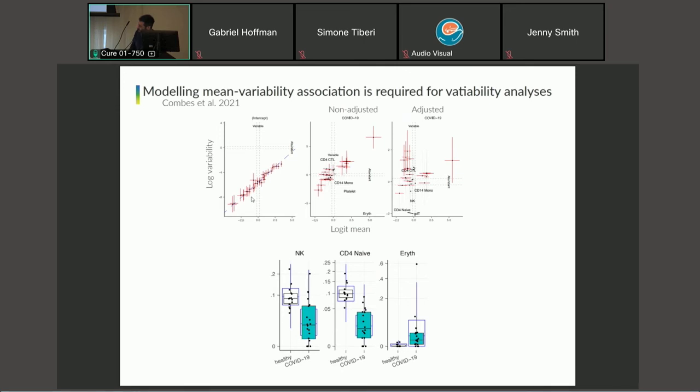I'll show you an analysis done on a dataset. This is a simple linear model where we are comparing healthy individuals with COVID-affected individuals. Here's the intercept, and here's the effect. We're plotting logit mean and log variability. This is the baseline. We can see this striking association here. Because mean and variability are associated, their effects will be associated. As you can see, if we don't take into account this association, every time we call a differential abundance, we also call a differential variability. So we will have learned nothing of the variability. But when we regress this baseline association, some variability effects start to show up that are independent of the effect of abundance.